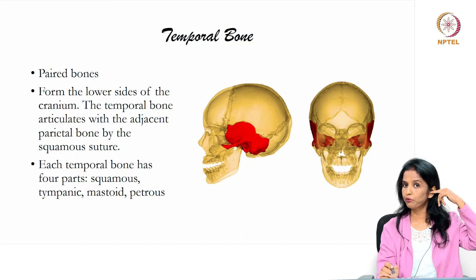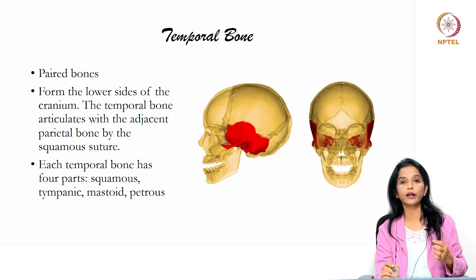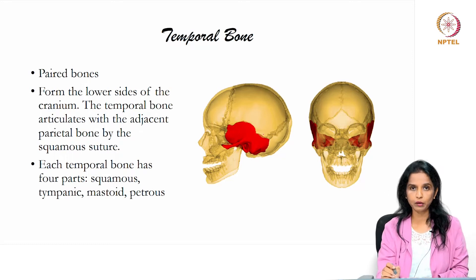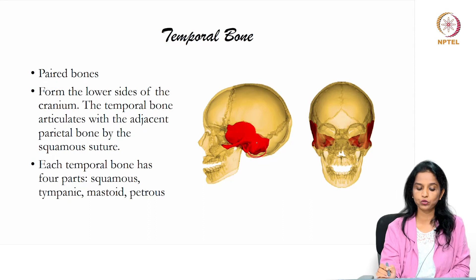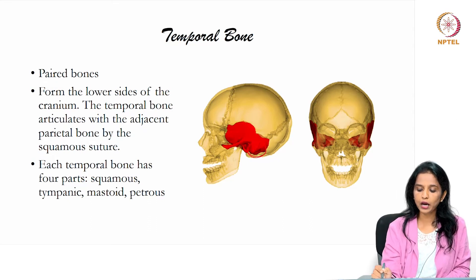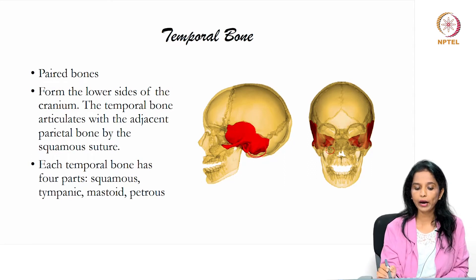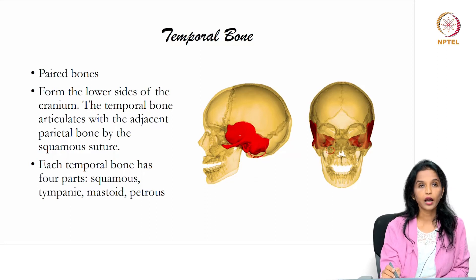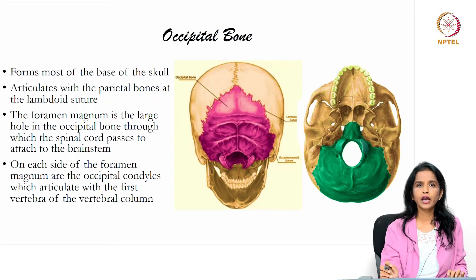The tympanic region is the part near or housing the auditory organs. The mastoid part is the region containing the mastoid process. The petrous part is on the inner aspect. So the temporal bone forms the lower sides of the cranium, articulates with the parietal bone at the squamous suture, and has four parts: squamous, tympanic, mastoid, and petrous.